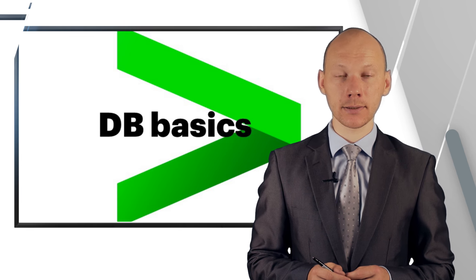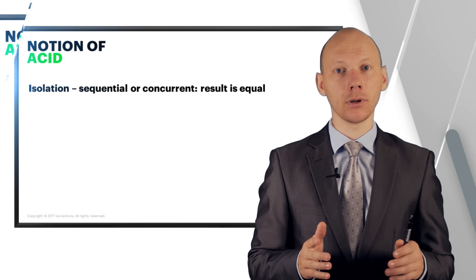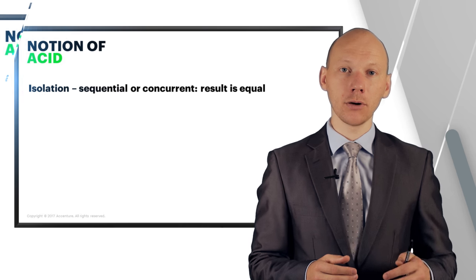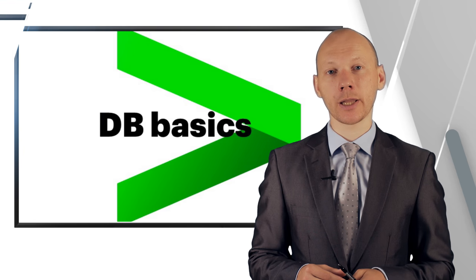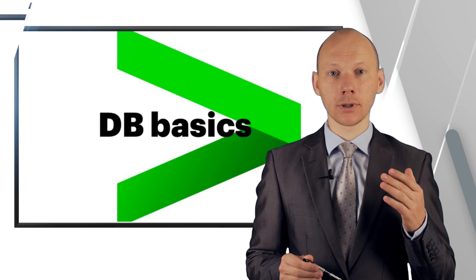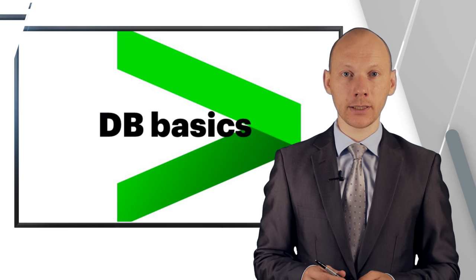And the next thing is the isolation. This means that despite the fact that transactions are coming in a random manner, their result should be equal. Either they're going to be executed concurrently or sequentially. This is very interesting and important point because mostly there is one database that is storing multiple applications that are trying to access data or modify data at the same time. And the database management system should ensure that nothing is broken and the state is valid.